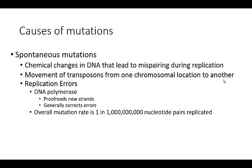We can correct many of these errors through a protein — DNA polymerase. What it will do is proofread the new strands and generally correct the errors. Prior to this proofreading event, it's about one in maybe 100,000 base pairs that gets mutated, which is a pretty high rate. After this proofreading event, though, the overall mutation rate is much lower — only about one in maybe a billion nucleotide pairs that are replicated.